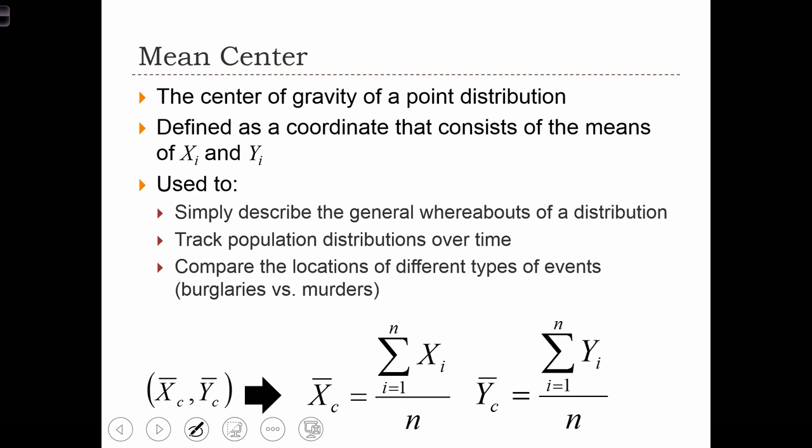We can also compute a mean center for a point distribution at different time periods and therefore track how a point distribution is shifting in space over time. We could also compare the locations of different types of events.